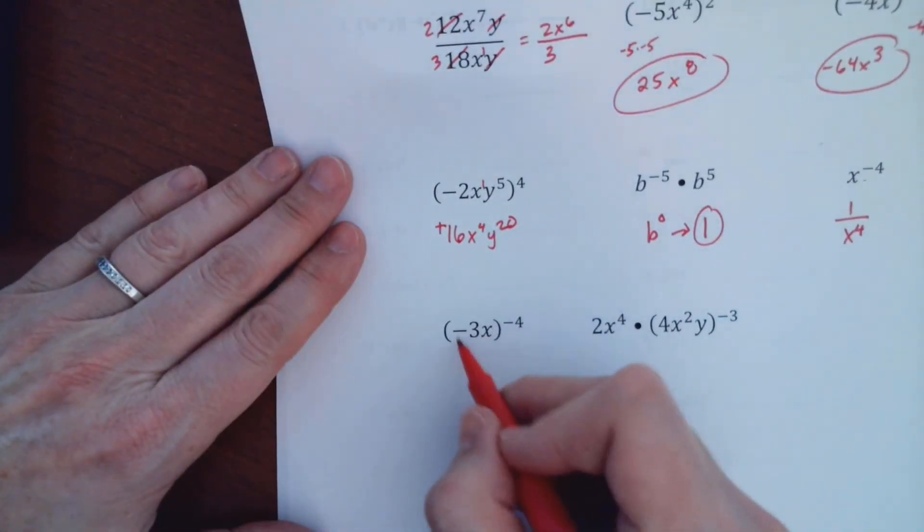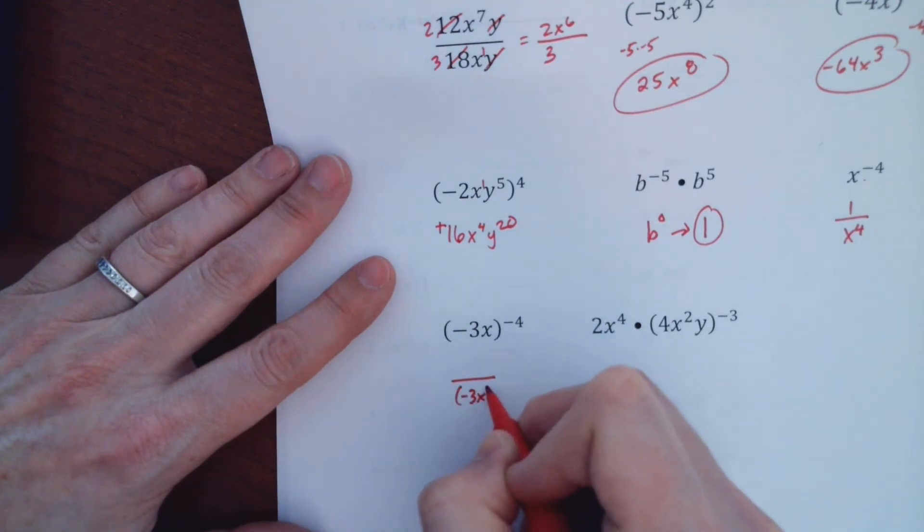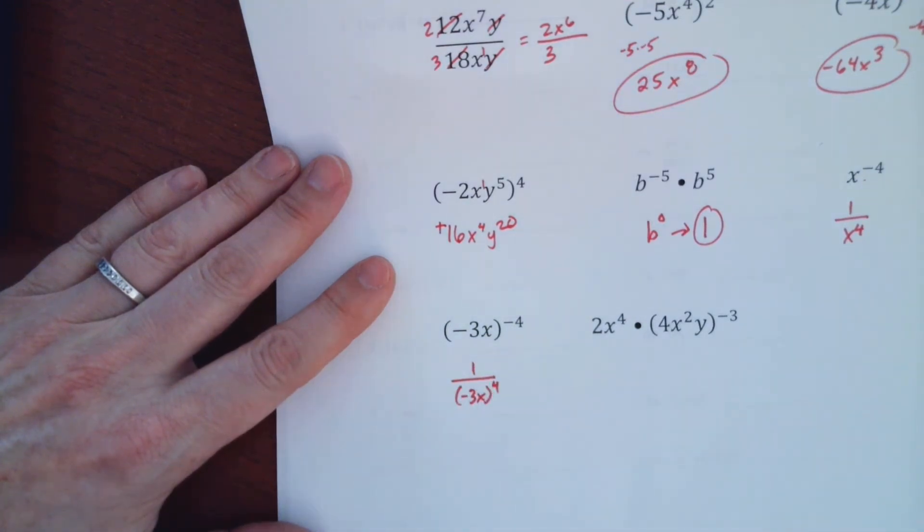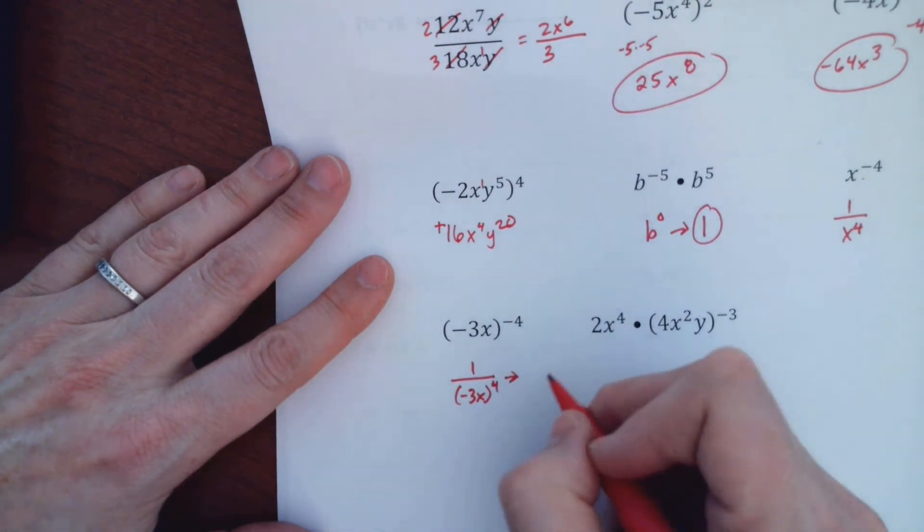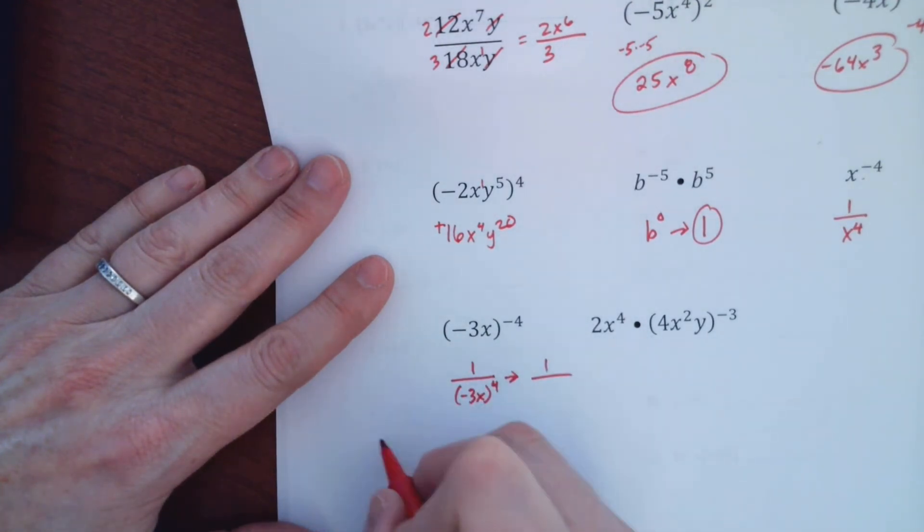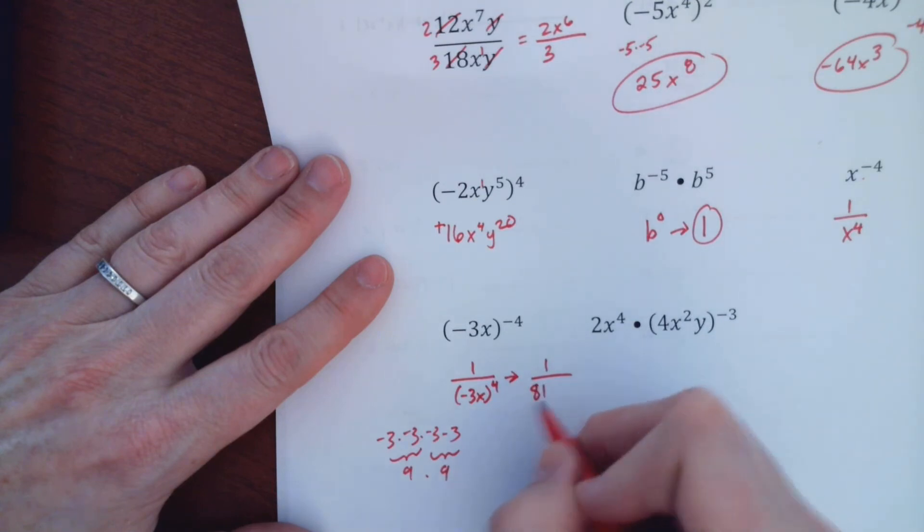So here, this whole thing has a negative exponent. So the whole thing goes to the bottom with a positive 4 underneath the 1 when there's nothing else there, because there's nothing else in front. So let's see. Negative 3 to the fourth. So negative 3 times negative 3 times negative 3 times negative 3. This makes 9 times 9, so 81. And then X to the fourth.